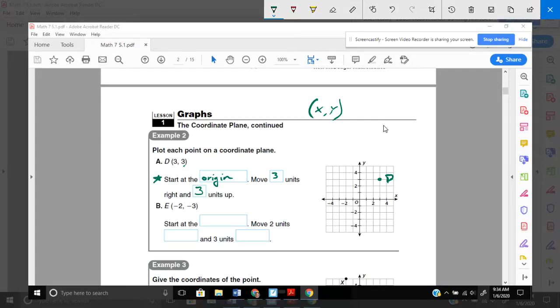For the next one, for letter B, it wants us to plot the point E. And that is at negative two, negative three. Remember, X is first. Then it's Y. So we're going to start at the origin. That's where we always start. And we're going to move two units to the, well, negative two on the X-axis. This is the positive. So we need to actually move two units to the left. And three units, well, it's also negative three. So on our Y-axis, negative would be down. So starting at the origin, two to the left and three down. One, two, three. Right there will be point E.